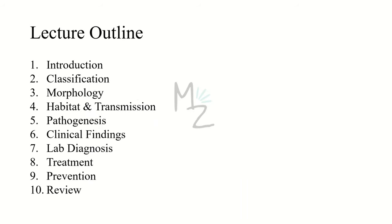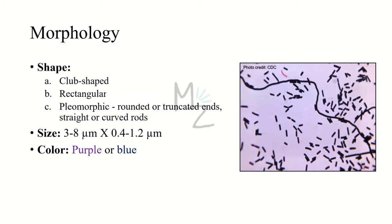Lecture outline. We are done with the introduction and classification. Now we'll be looking at morphology, habitat and transmission, pathogenesis, clinical findings, lab diagnosis, treatment, prevention, and at the end, as usual, we'll review the lecture.